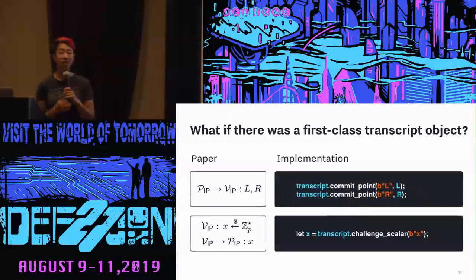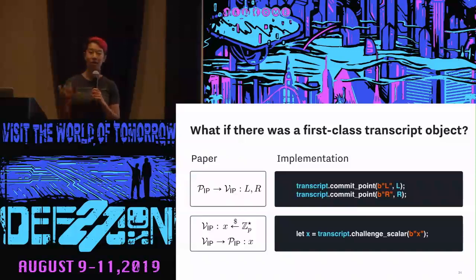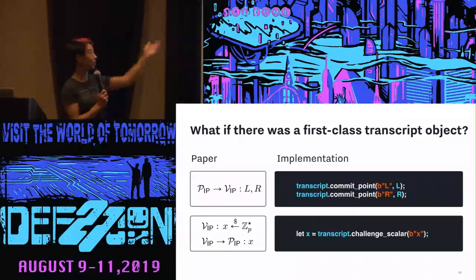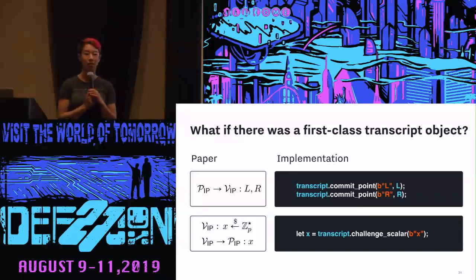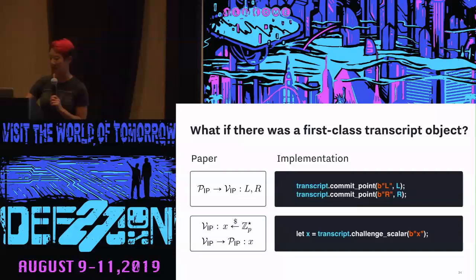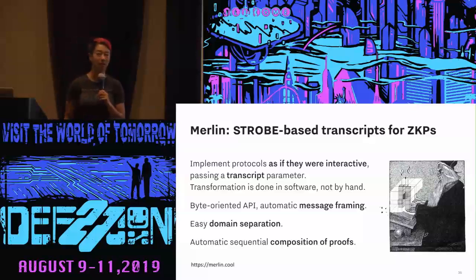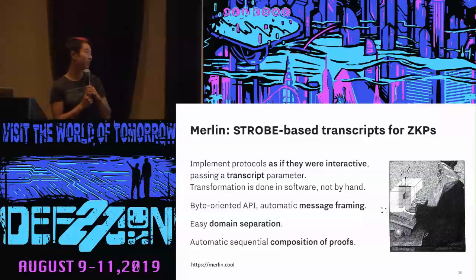It would be really nice if you just had a transcript object that held onto all the randomness for you and gave you some randomness back whenever you asked for it. If you implemented the interactive step — the prover gives the verifier L and R — in practice you just give the transcript L and R and get a challenge scalar back from the transcript. Luckily, Henry de Valence also implemented Merlin, which is a STROBE-based transcript for zero-knowledge proofs. This gives us everything we want: message framing, domain separation, composition of proofs. It makes our lives super easy when dealing with the Fiat-Shamir heuristic — we treat it as a black box. More information is available at merlin.cool.